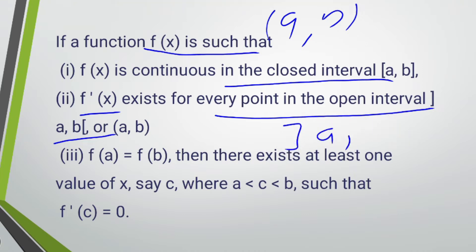This f'(x) means the function f(x) is differentiable. The third point is if f(a) equals f(b), then there exists at least one value of x, say c, where c lies between a and b, such that f'(c) equals 0.